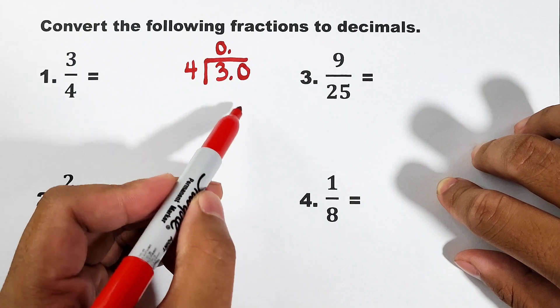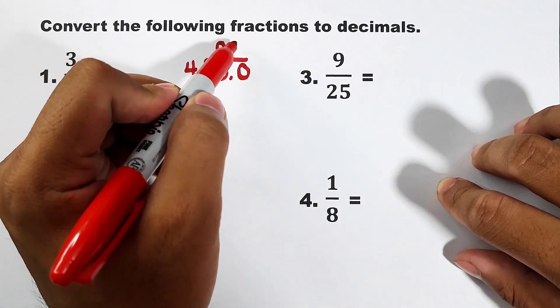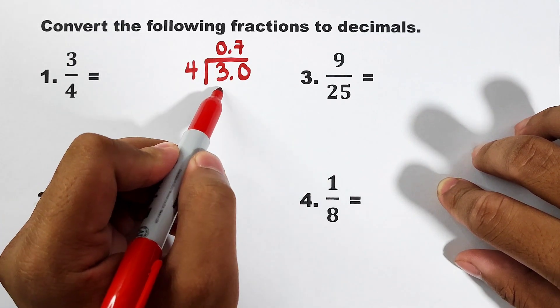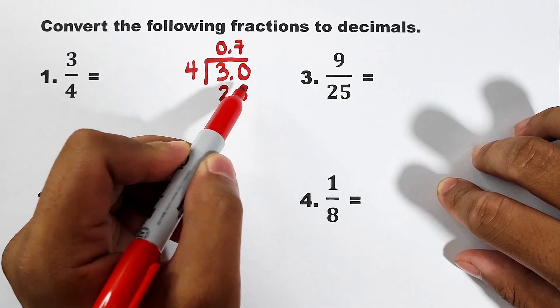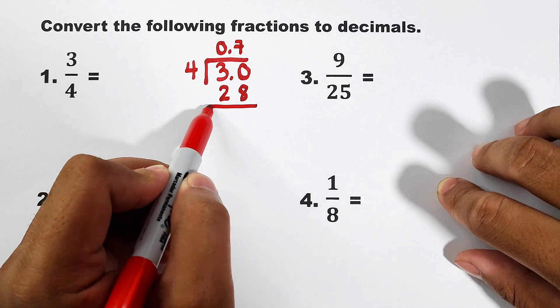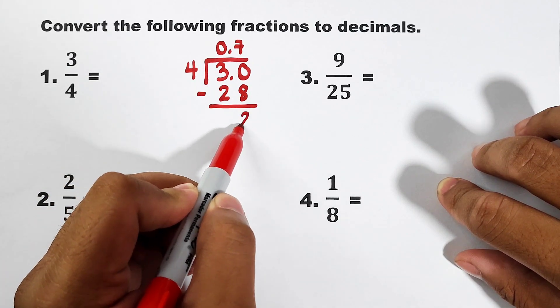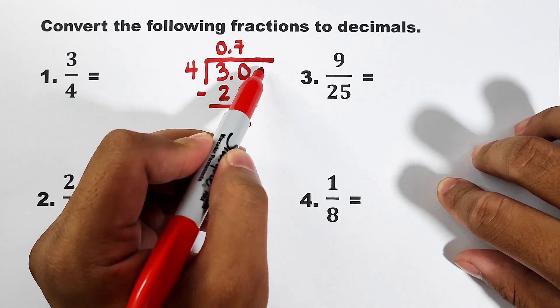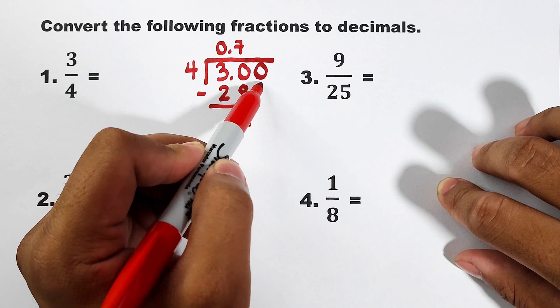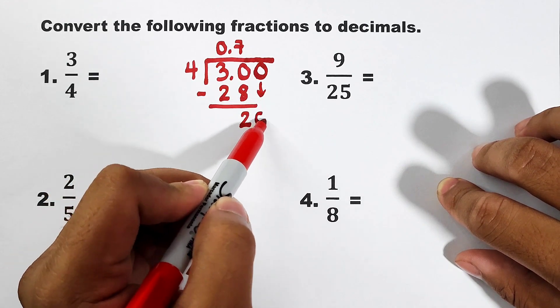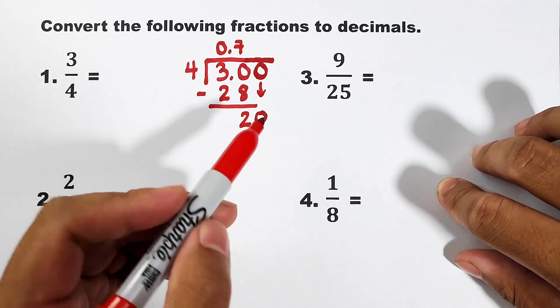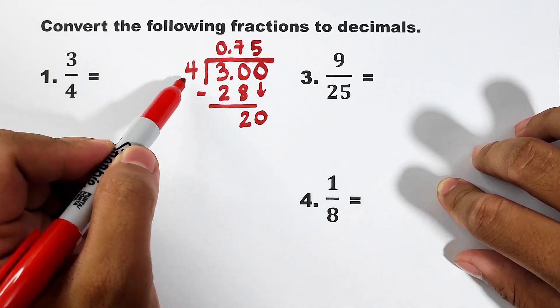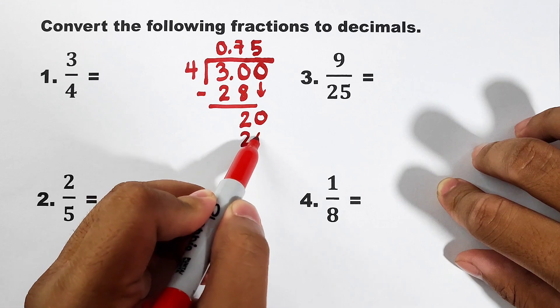Now, we have 30. 30 divided by four, which is equal to seven. And seven times four, that is equal to 28. Subtract them. 30 minus 28 is 2. And as you can see, we still have number here, meaning we will extend this one and put another zero. And we will bring down zero. So what we have now is 20. 20 divided by four is 5. And 5 times 4 is equal to 20.